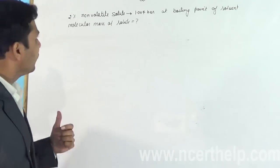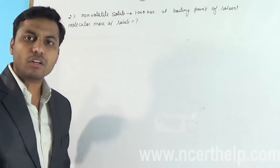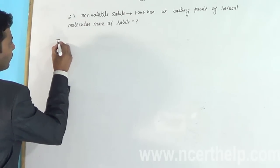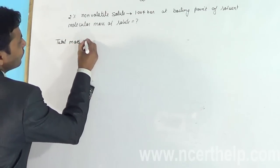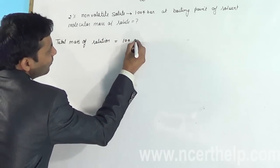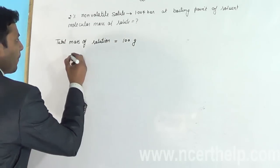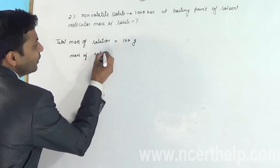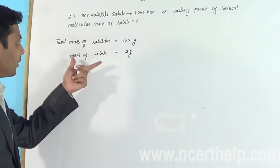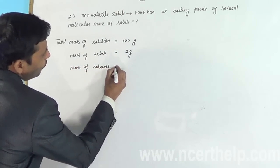Here you can see the non-volatile solute is in percent. Whenever solute is in percent, we always take total mass of solution equal to 100 grams. So total mass of solution is equal to 100 grams. 2% of this solution will be 2 grams, so mass of solute, non-volatile solute, is equal to 2 grams.